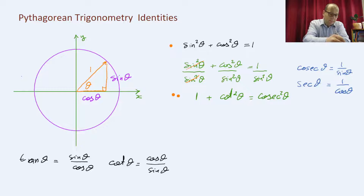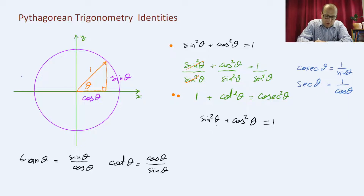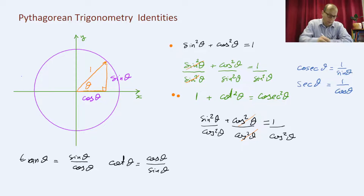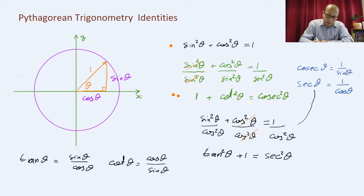For the third identity, we take sine squared theta plus cos squared theta equals 1 and divide each term by cos squared theta. The cos squared over cos squared cancels and leaves 1. Sine squared over cos squared, by the tan identity, is tan squared theta. And 1 over cos squared is secant squared. So tan squared theta plus 1 equals secant squared theta. That is the third identity.